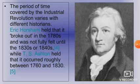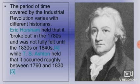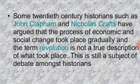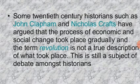The period of time covered by the industrial revolution varies with different historians. Eric Hobsbawm held that it broke out in the 1780s and was not fully felt until the 1830s or 1840s, while T.S. Ashton held that it occurred roughly between the 1760s and 1830. Some 20th-century historians such as John Clapham and Nicholas Crafts have argued that the process of economic and social change took place gradually and that the term 'revolution' is not a true description of what took place. This is still a subject of debate amongst historians — this is additional information not given in the book.